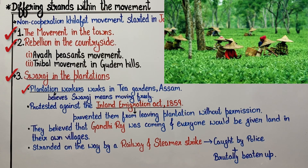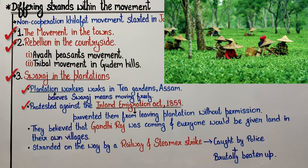Then in 1859 there was an act passed called the Inland Immigration Act. Under this act, no tea plantation worker could leave the tea gardens without permission. The workers had thought that they were free.